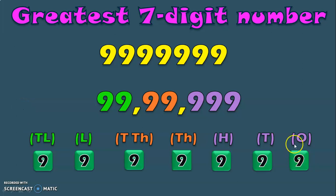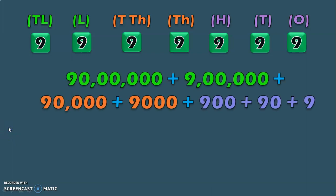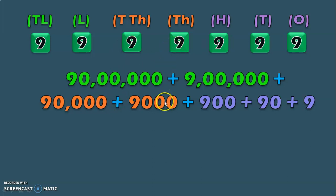We have the number 9 in the ones place, tens place, hundreds place, thousands place, ten thousands place, lakhs place and ten lakhs place. Once you know to write a number in the place value chart, you can write it in the expanded form very easily. So here we have 9 in the ten lakhs place which makes 90 lakhs, plus 9 lakhs, plus 9 in the ten thousands place which makes 90 thousand, plus 9 in the thousands place which makes 9 thousand, plus 9 in the ones place makes 9.